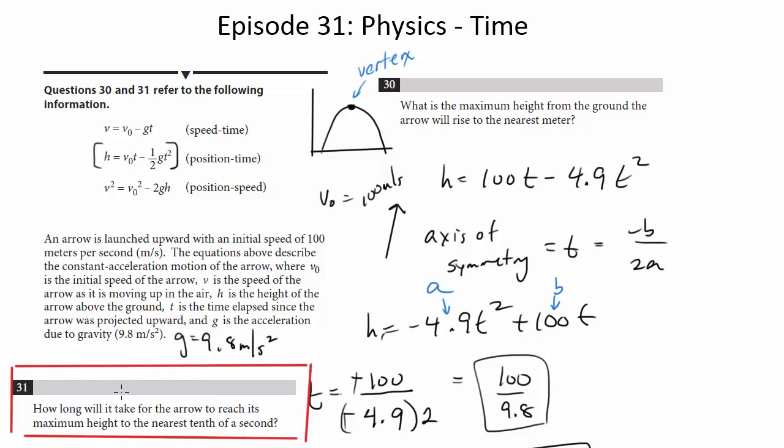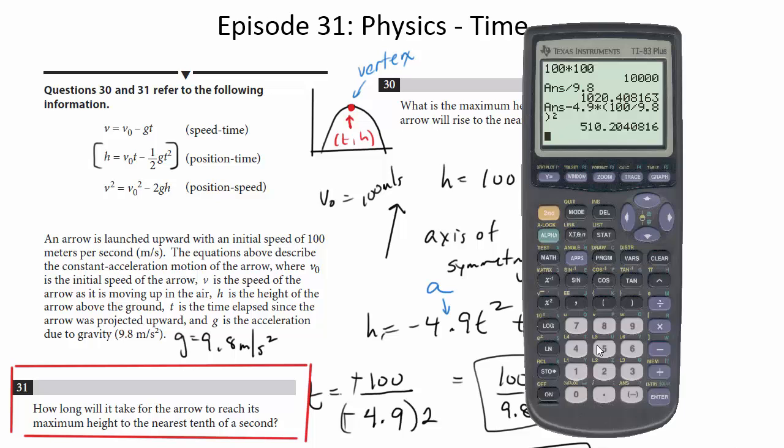Because we want the time that it will take for it to reach its maximum height. That is, as we found out earlier, that is the x-coordinate, or in this case the t-coordinate, of this vertex. So we already found that by doing the axis of symmetry, all this stuff. So we found that's 100 over 9.8, so let's get that actual value here.